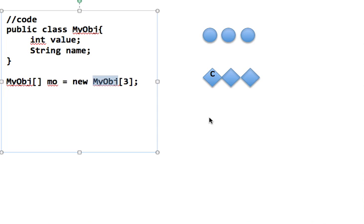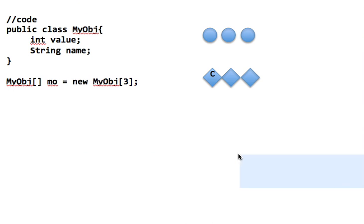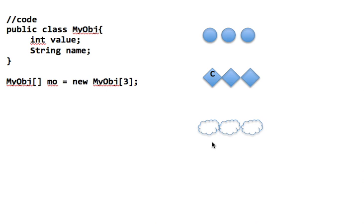Java immediately looks at MyObject and assigns it a shape. Let's assume the shape of this object is like a cloud. So when I say MyObject[] mo equals new MyObject[3], I've created three placeholders for objects of type MyObject — for instances of MyObject. But they're not MyObject objects yet; they're just the space to put MyObject objects. Can I put a string in these clouds? No. Can I put an int? No. I can only put objects of type MyObject because they're shaped like a cloud.